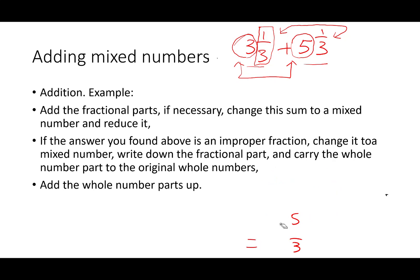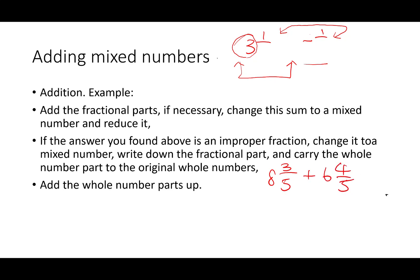Now let's look at another example where the fractional parts, when added, give us an improper fraction. Let's say we have eight and three-fifths plus six and four-fifths. We look at the fractional part first: three-fifths plus four-fifths gives us seven-fifths, which is an improper fraction. Converting it back to a mixed number gives us one and two-fifths.